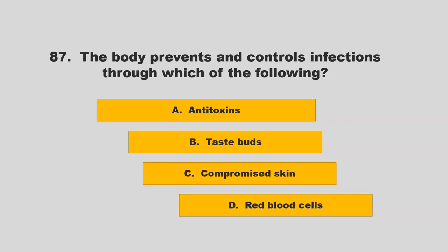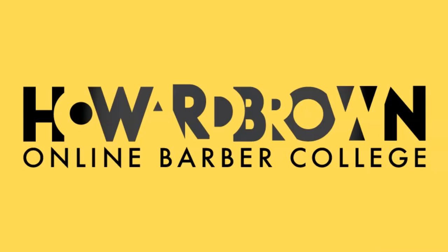The body prevents and controls infections through which of the following? Options: antitoxins, taste buds, compromised skin, or red blood cells. The correct answer is A: antitoxins.